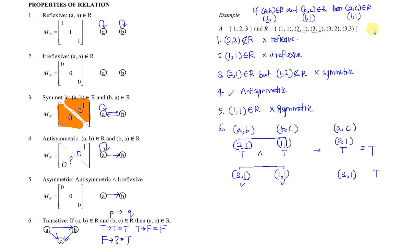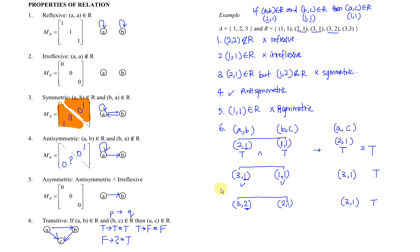The next element is (3,2). We have (3,2) and the range is 2, so we must find an element with domain 2. From the relation, we have (2,1). So the shortcut should be (3,1). Do we have (3,1)? Yes, we have. So this is also true. If we are able to match all the relations with a shortcut, then this is considered transitive — all true values are true.